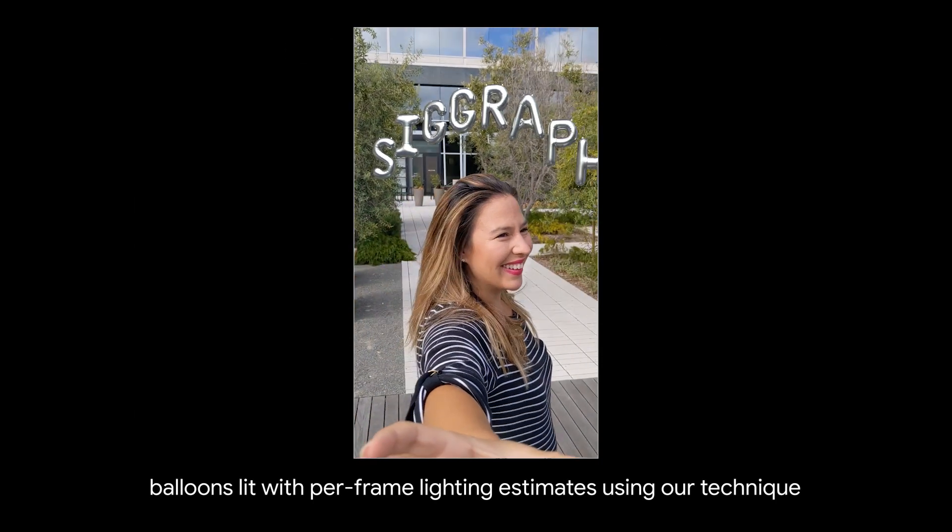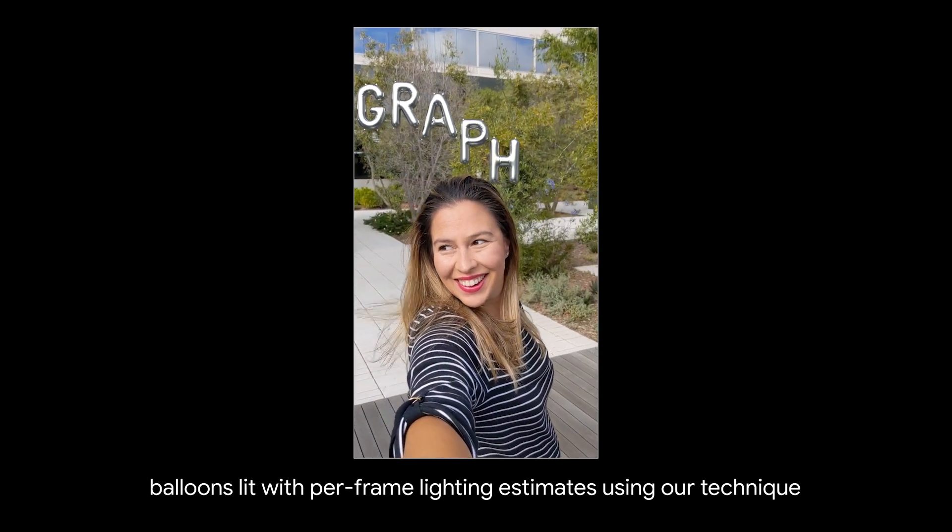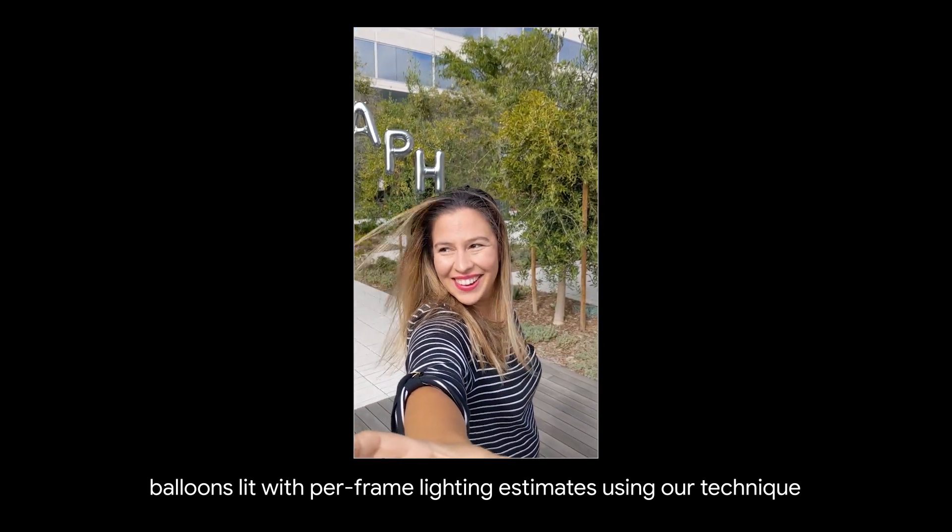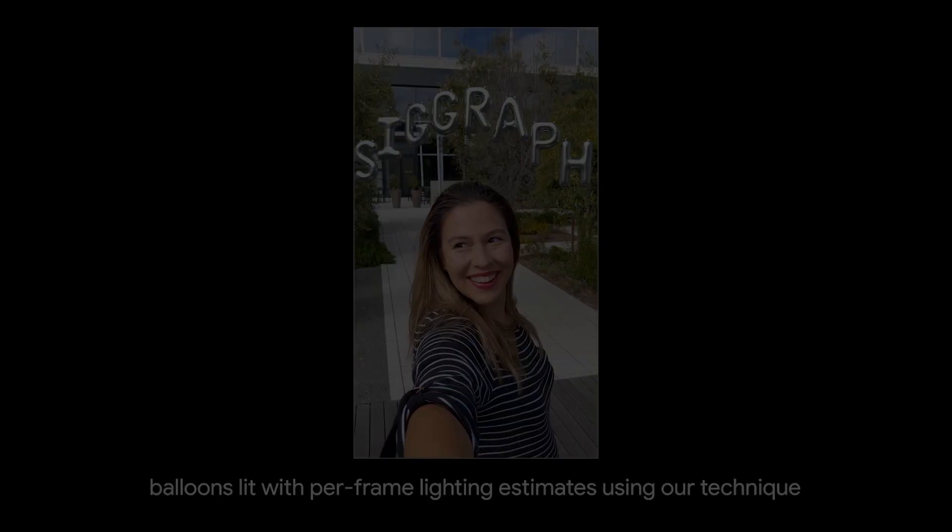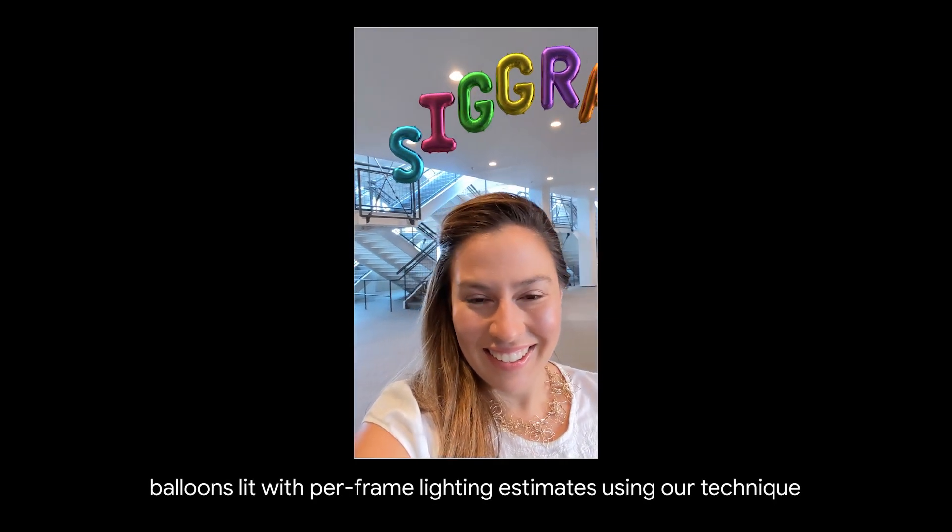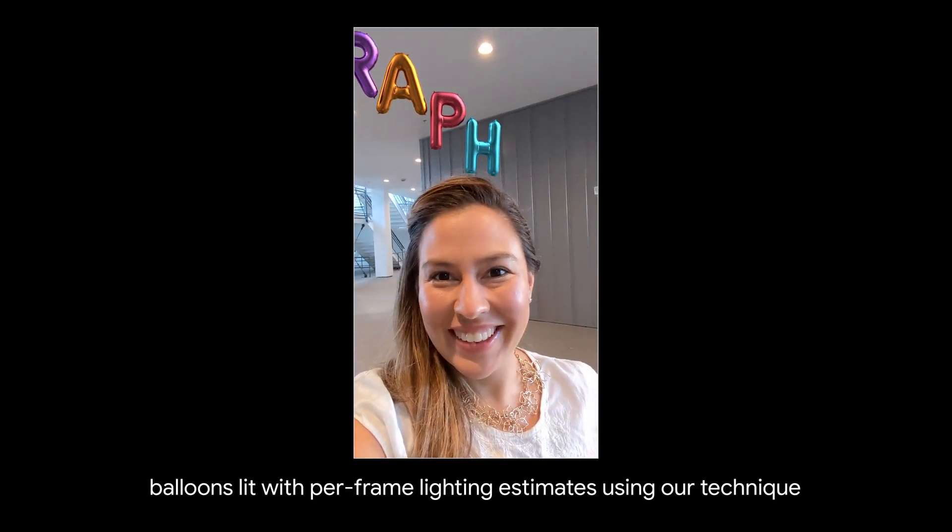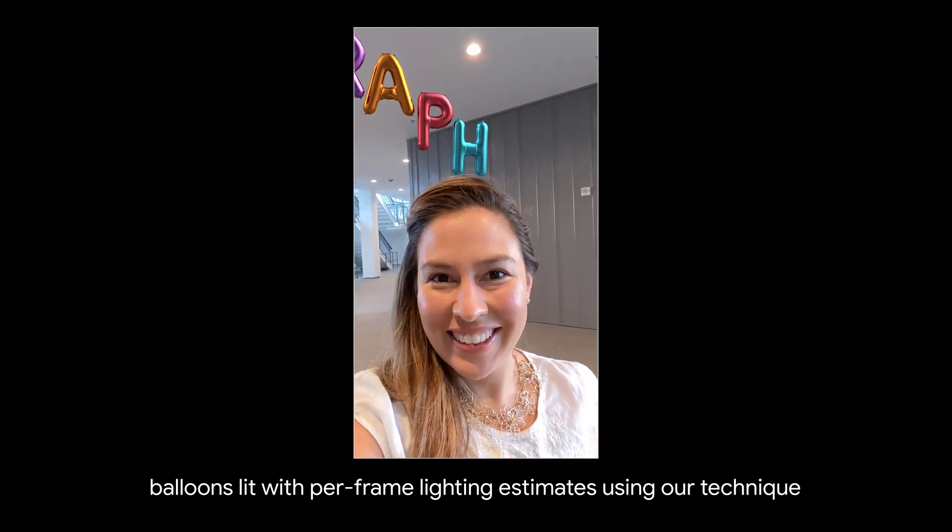Next we show an offline post-production compositing example where per-frame lighting estimates are used to render virtual balloons with sharp specular reflections. And here's another example with multicolored balloons. You can see the specular reflections from the point sources located in the scene.